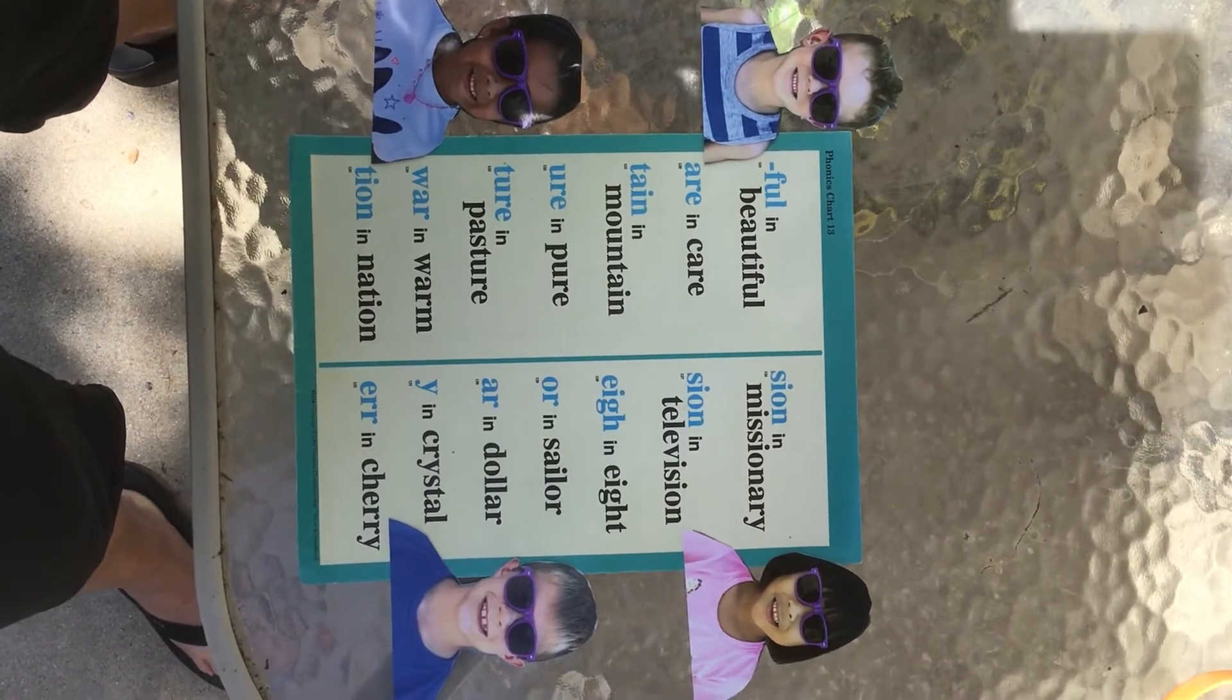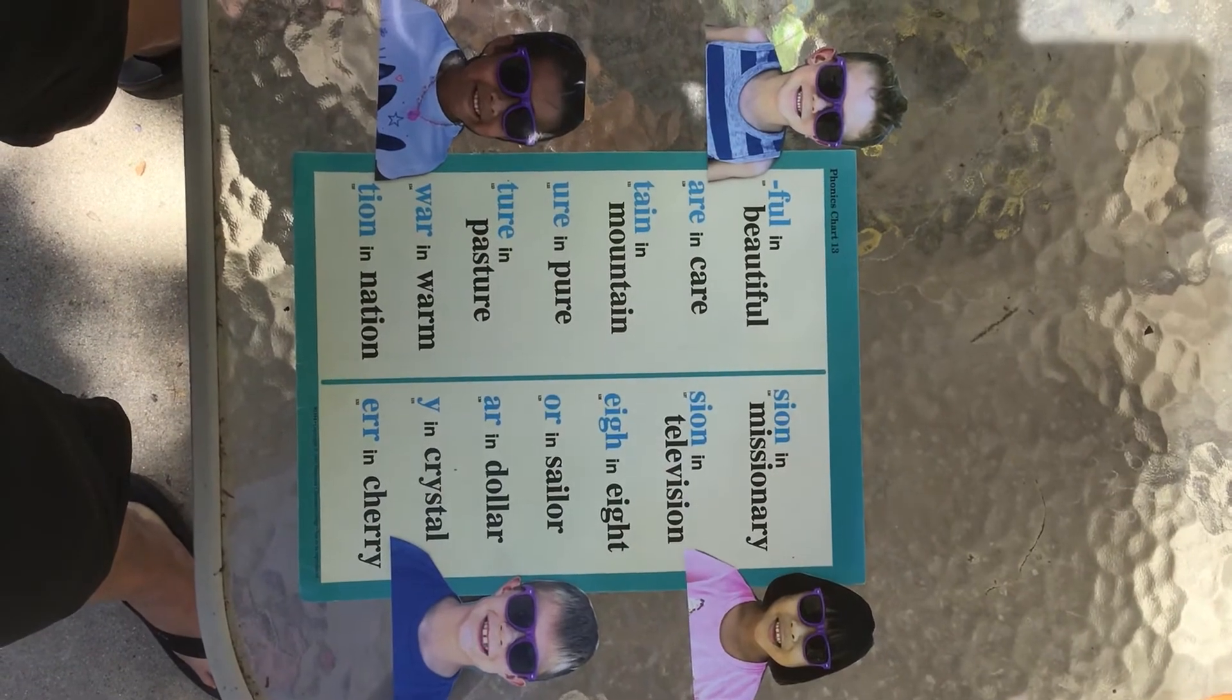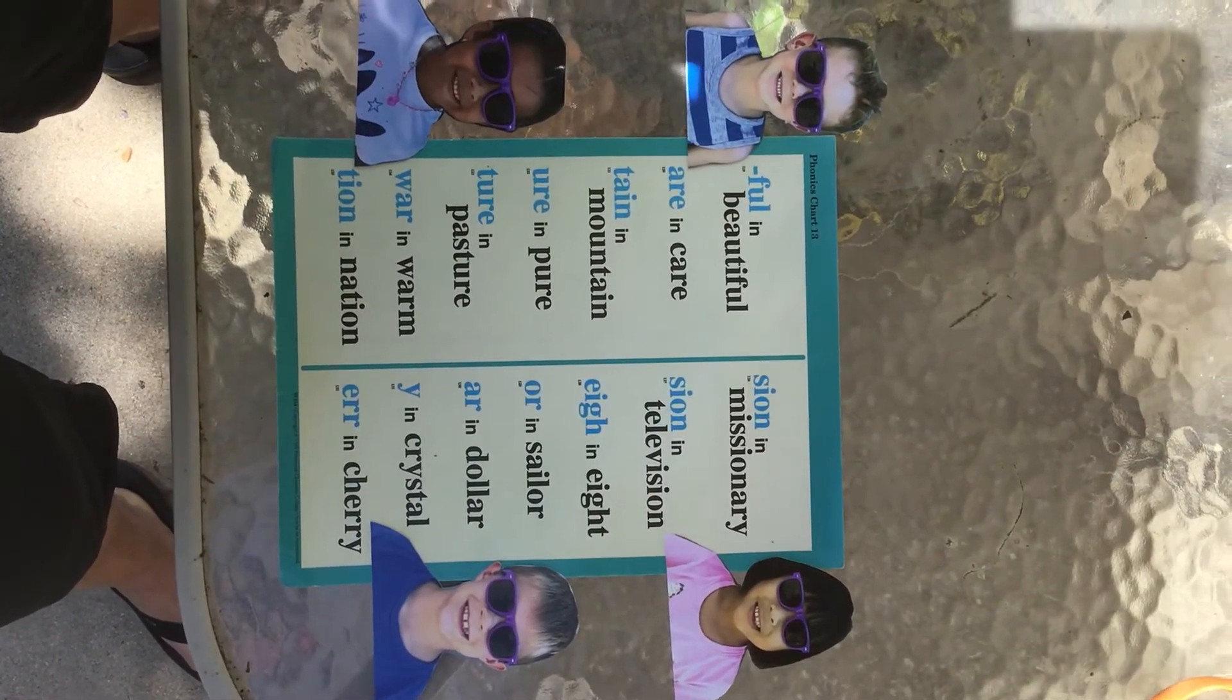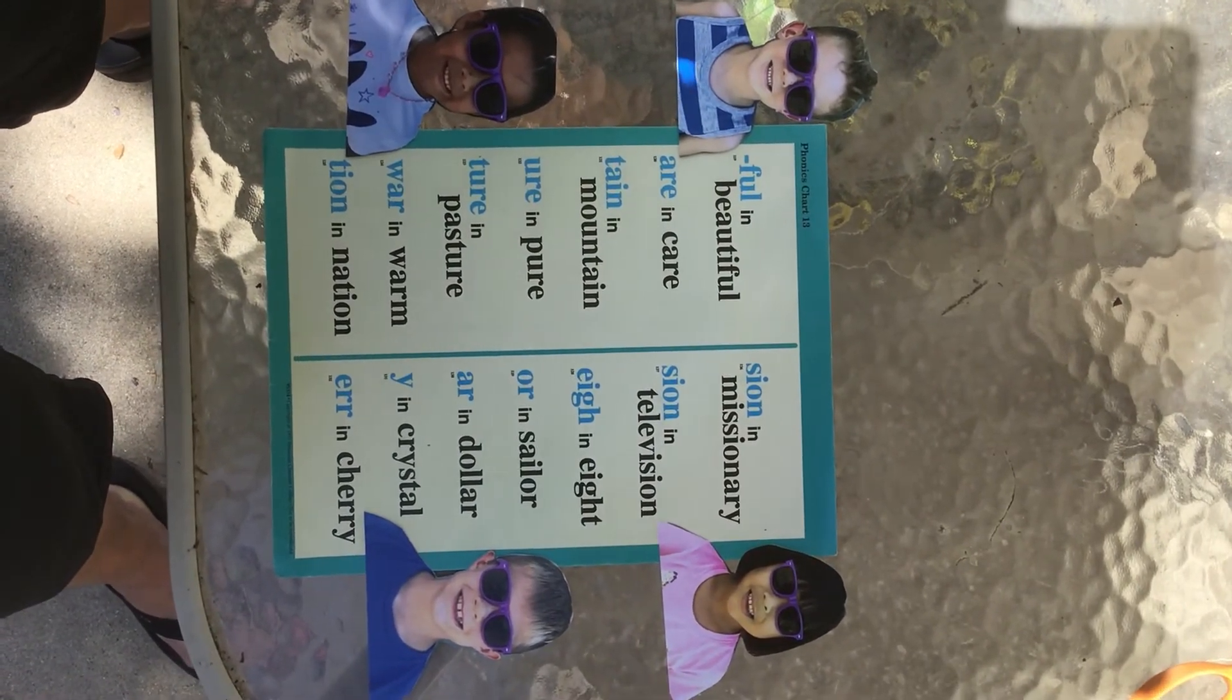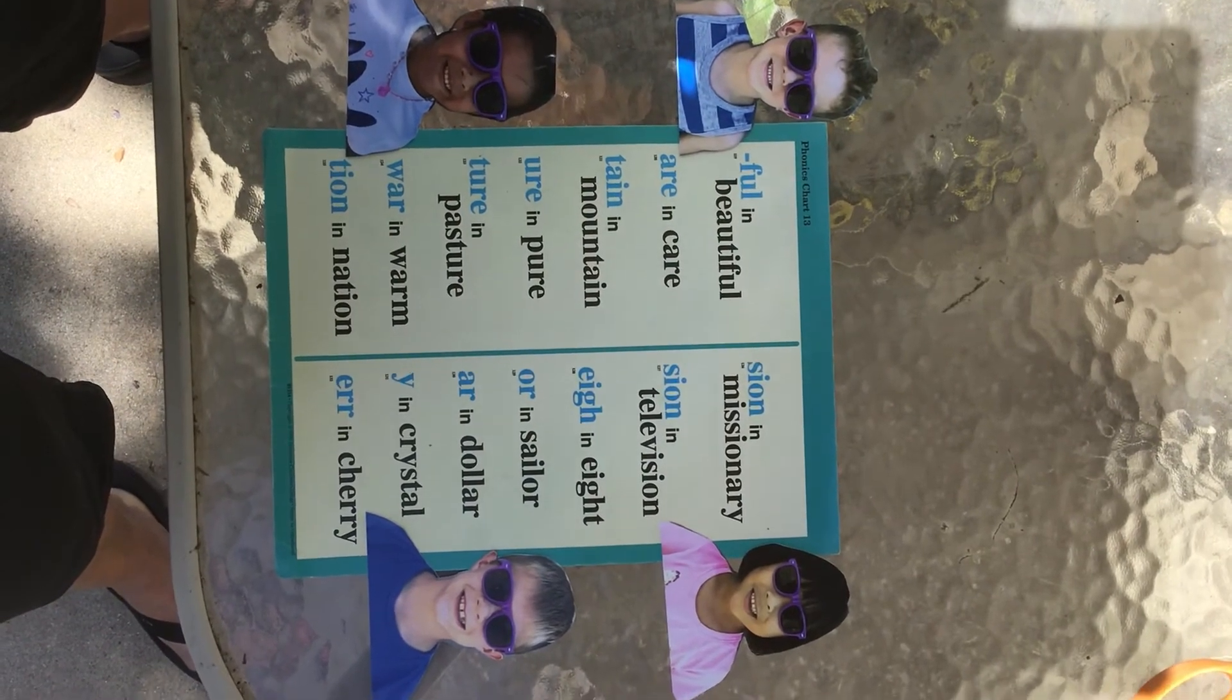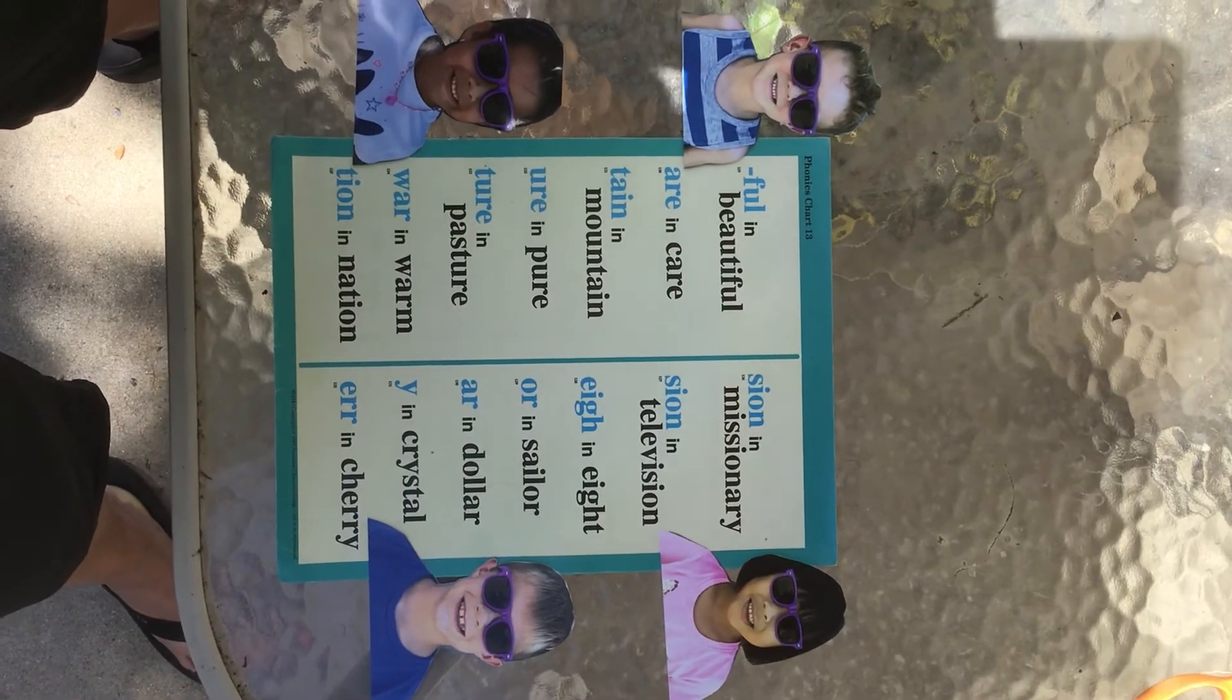E-I-I-G-H says a in eight. O-R says urr in sailor. A-R says urr in dollar.